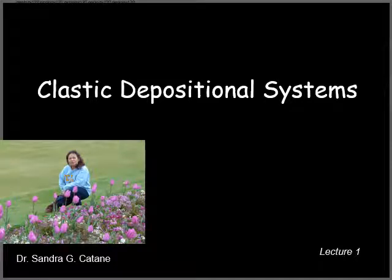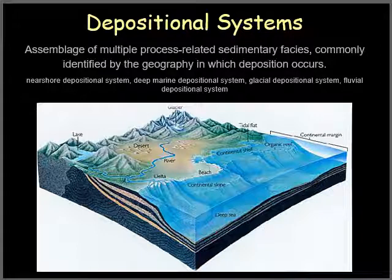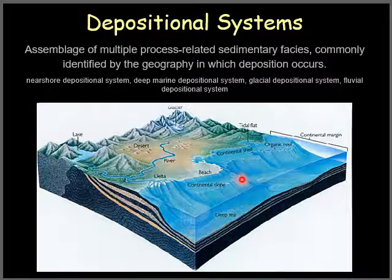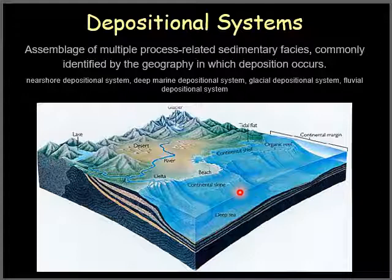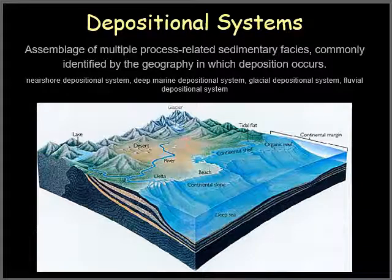Hi, this is Dr. Sandra Gikatane giving you lecture one on clastic depositional systems. Depositional systems include multiple processes producing sediments of related sedimentary facies, and they can be identified geographically. You can look at near-shore depositional systems, then marine or deep marine depositional systems, and on land you also have glacial systems and fluvial depositional systems.